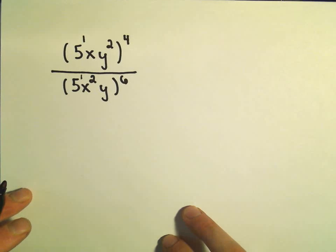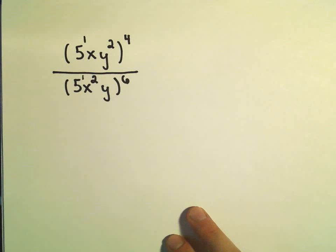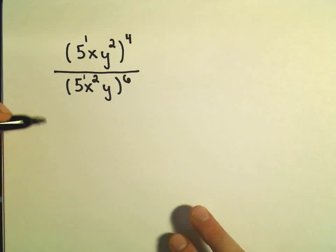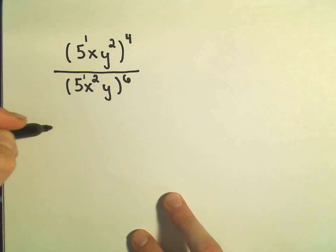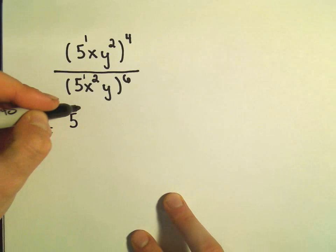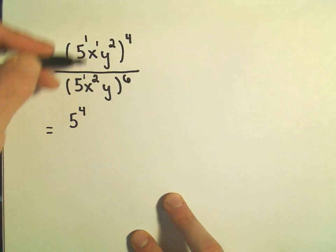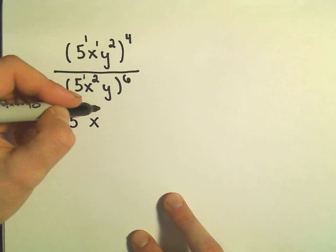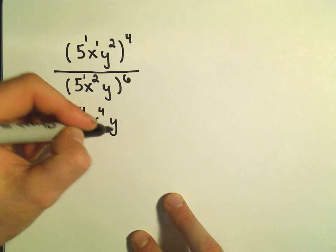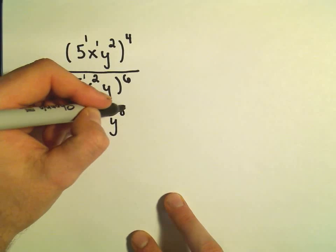Okay, so let's do our second example as well. So we have 5xy squared to the 4th over 5x squared y to the 6th. We'll do the same thing here. So we would get 5 to the 4th when we multiply. We can stick our x to the 1st in there. So we would get x to the 4th. 2 and 4 is to the 8th power.